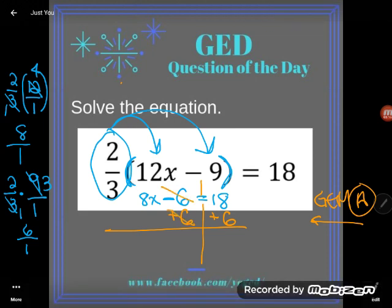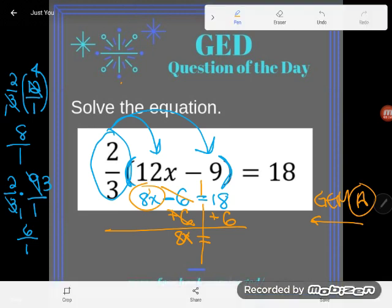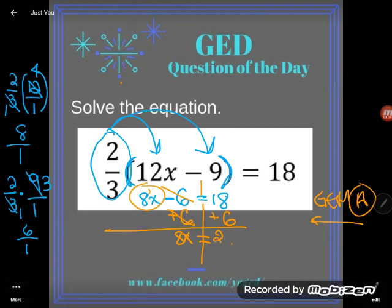Subtracting 6 and adding 6 are opposites. Only thing I have left on the left-hand side is 8x. And 8x will be equivalent to whatever I get when I make that change on the right-hand side. So 18 plus 6 is 24.